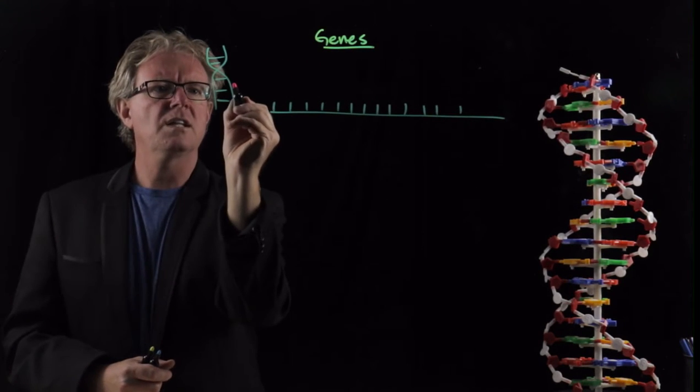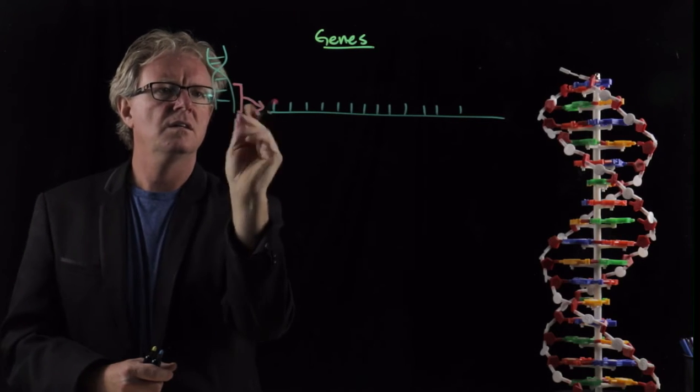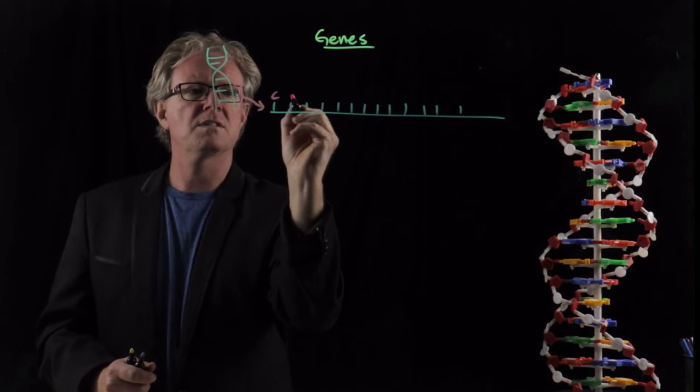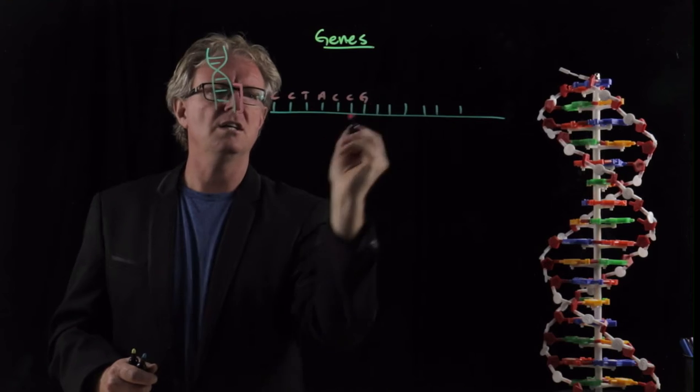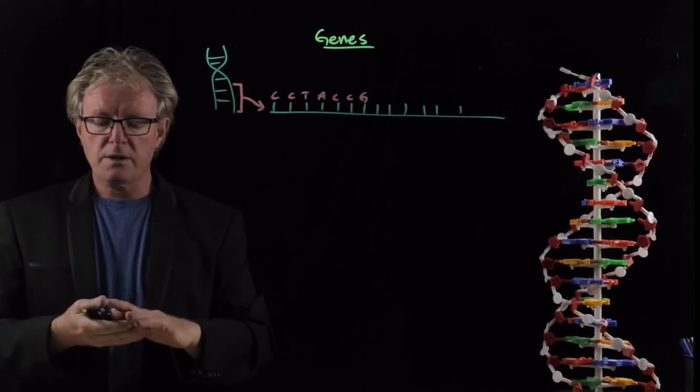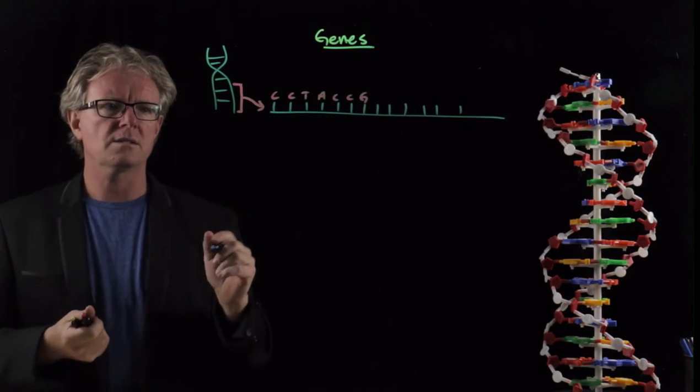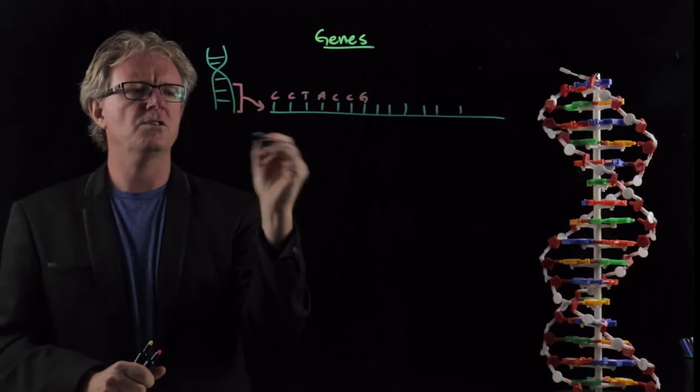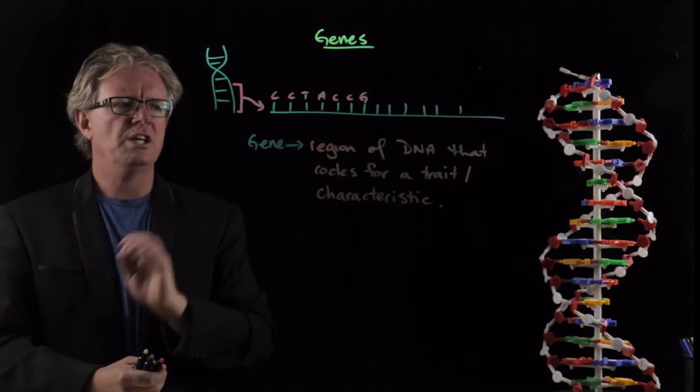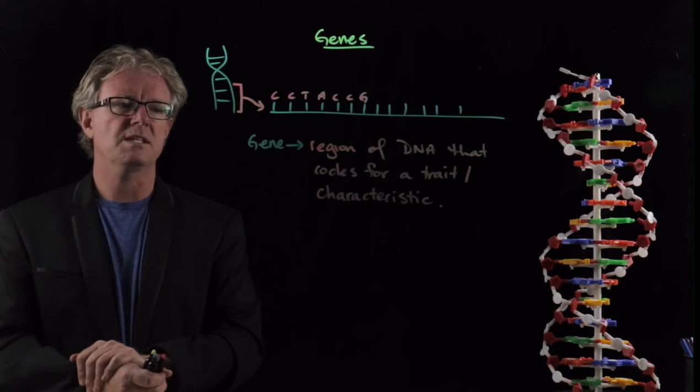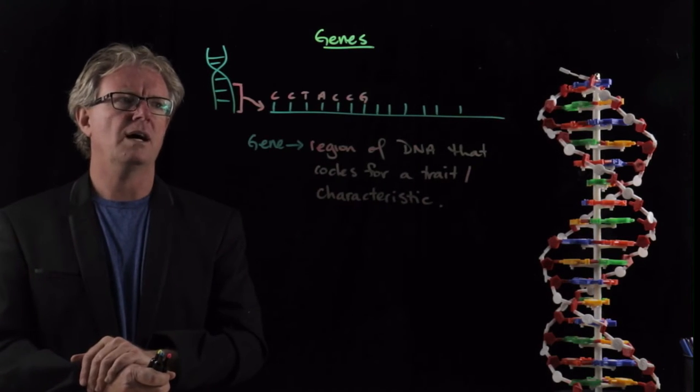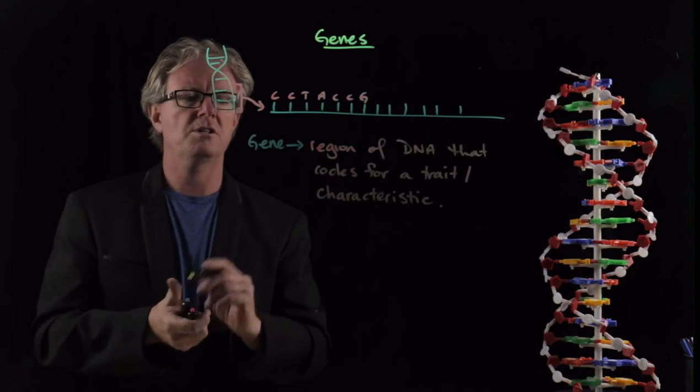If I'm looking at this region here, that region is made up of a series of bases. So we might have C, C, T, A, C, C, G, etc. And that segment of DNA will code for a characteristic. It will code for a trait. So let's write down some terms here. First, we have a gene. A gene is a region of DNA that codes for a trait or characteristic. Now that's a basic definition for early biology.